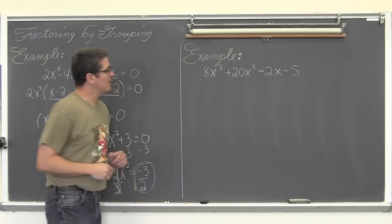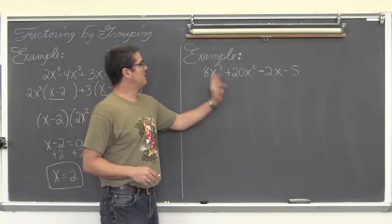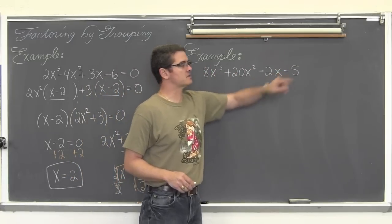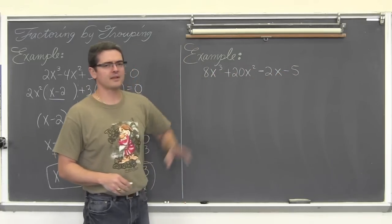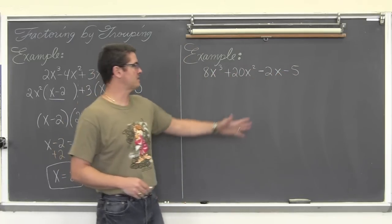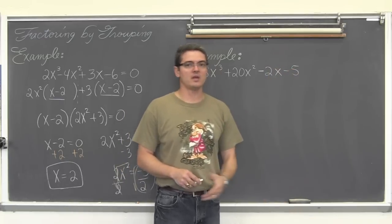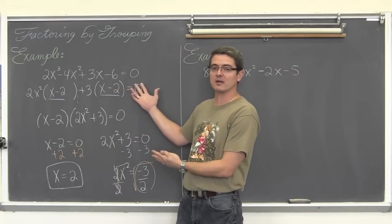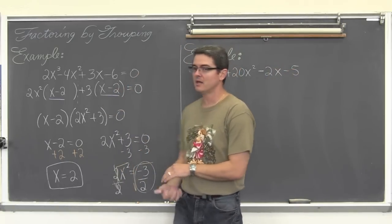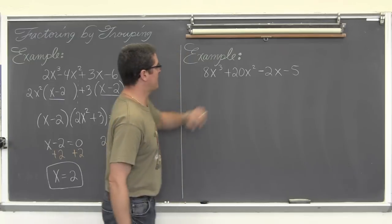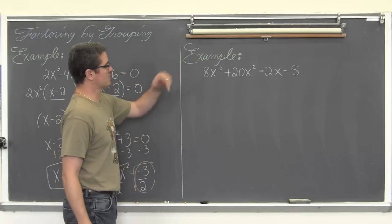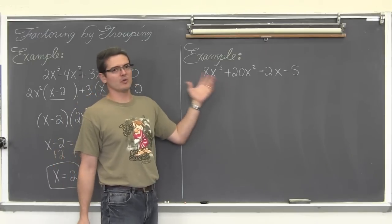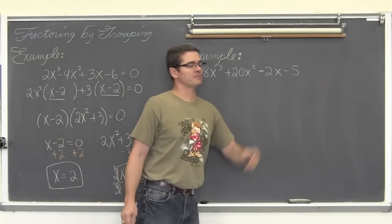Over here I have x cubed minus 20x squared minus 2x minus 5. We are not going to take the extra step of setting this equal to zero and solving the equation — I just wanted to show you that is generally what we do factoring for, to solve equations. Here we are just going to factor this four-term expression.